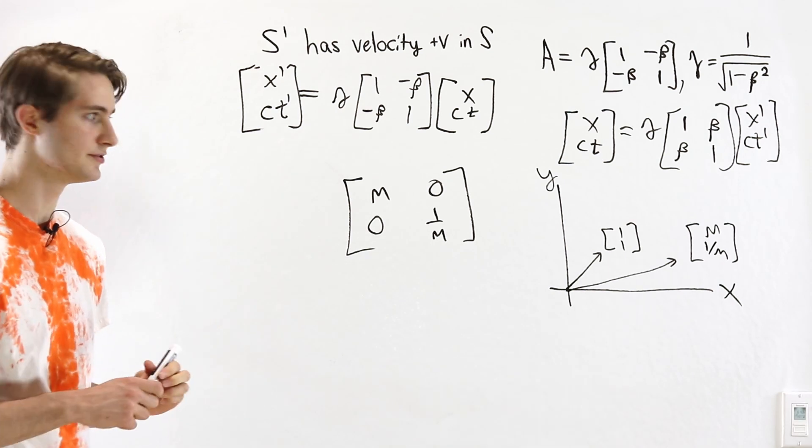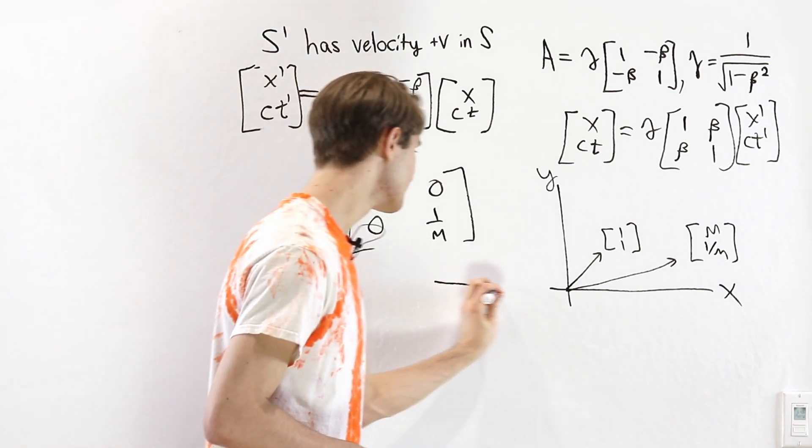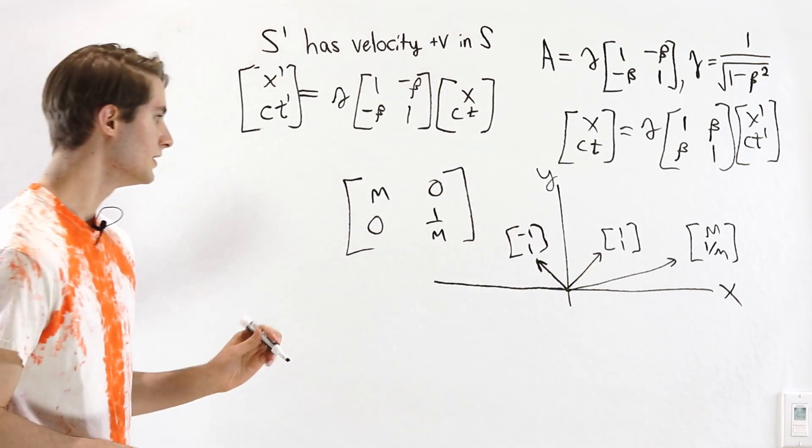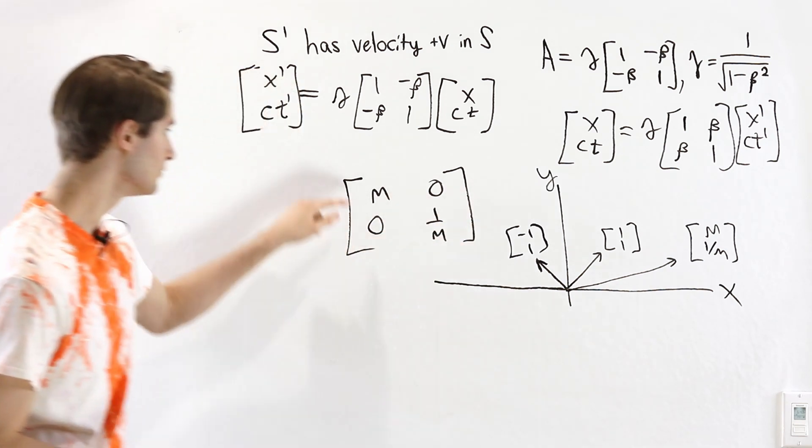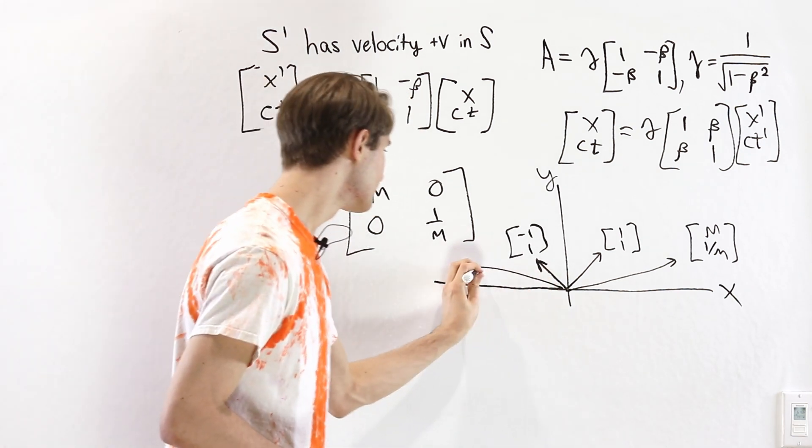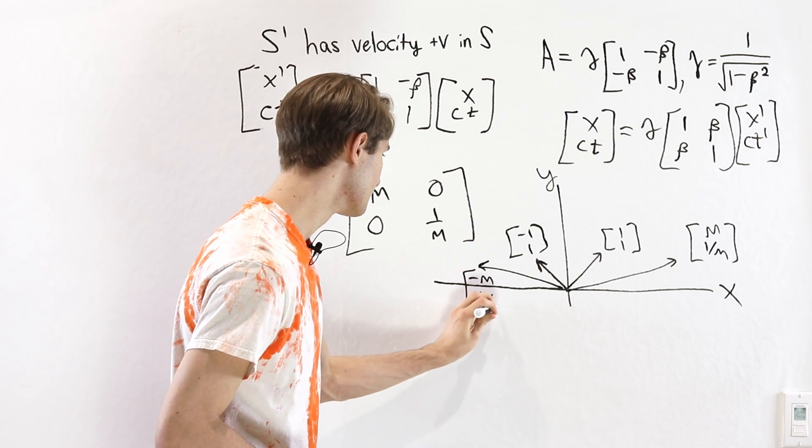Now when this happens, let's look at what occurs on the other side. If we have a vector negative 1, 1, if we apply the matrix, it's going to look exactly the same. We multiply the first component by M, and the second component by 1 over M. So this is going to get sent to the vector over here, negative M, 1 over M.